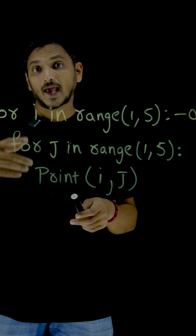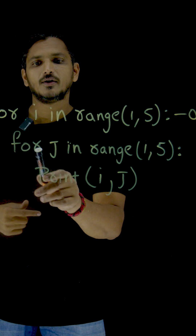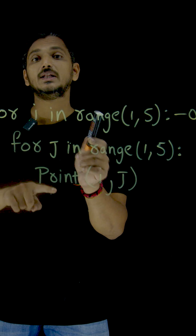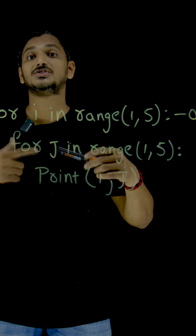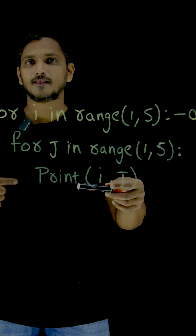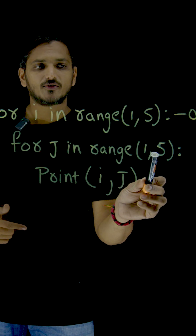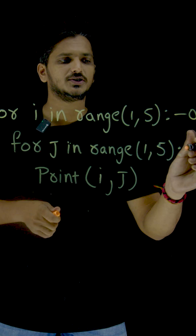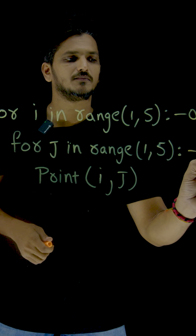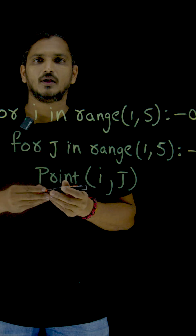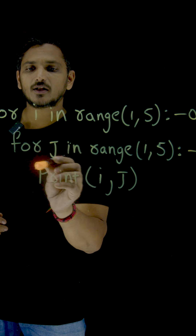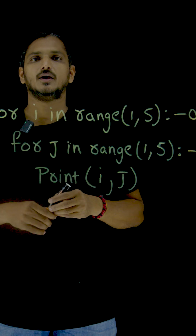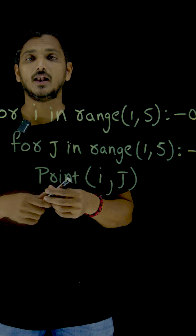What we have written inside the body? Again, we have written a loop — for j in range of 1 to 5. A loop within the loop, we call it a nested loop. What is the body of this inner loop? This is the inner loop, and the body of this inner loop — that is why we have given indentation here — is print i comma j. We are going to display i and j values.